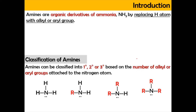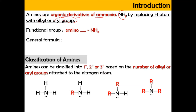For amines: amines are basically organic derivatives of ammonia, which is NH3, by replacing one of the hydrogens with an alkyl or aryl group. The functional group of amines is amino, where it has an NH2 group. The general formula is R-NH2, where R refers to alkyl or aryl group, and this refers to the aliphatic amine.